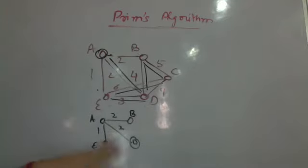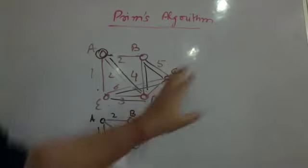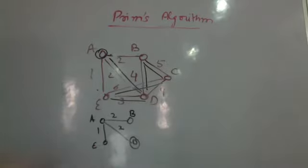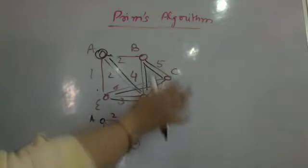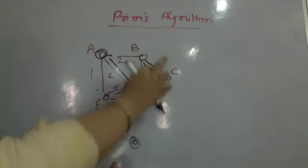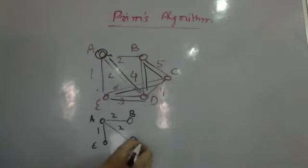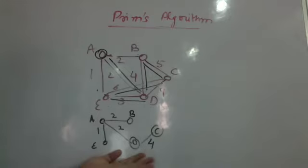I check all edges going out from this tree connecting to a node not yet covered. C has not been covered. The possible adjacent edges coming to C are E to C, B to C, and B to C, with weights 6, 4, and 5. I pick the edge with weight 4. All vertices are now covered and I have reached my minimum spanning tree.